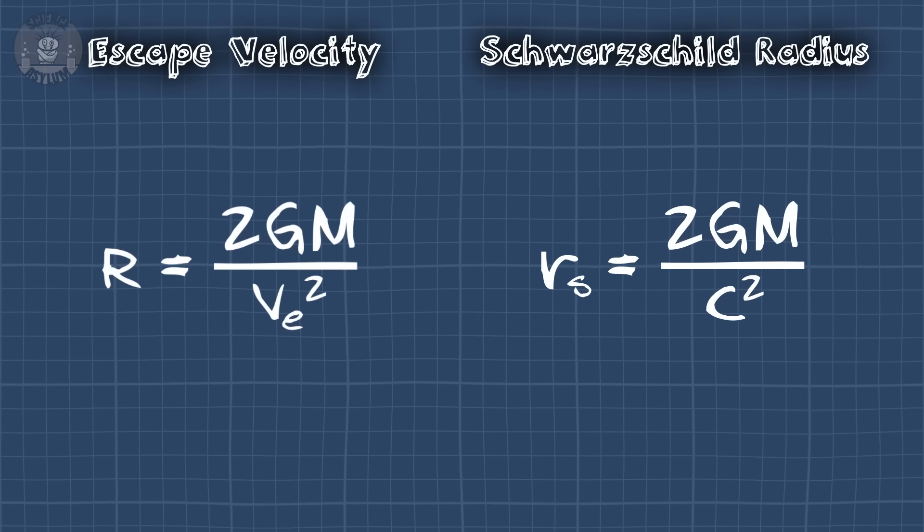Yes, they look the same, but that's just a coincidence. While those results are the same, they were derived using completely different models, which means they mean different things. An event horizon has nothing to do with escape velocity. An event horizon is about causality. It's about time.